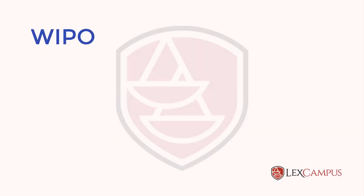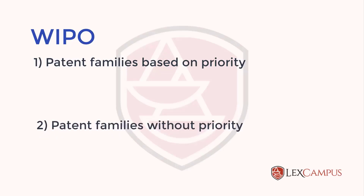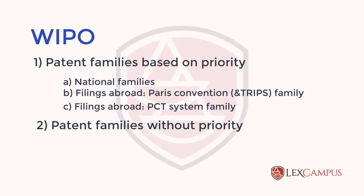WIPO classifies patent families as those based on priorities claimed, and also families without priorities. Priority-based families include national families, filings abroad via the PCT convention route or TRIPS, and filings abroad using the PCT system. A national family is, for example, when an application is filed and a divisional comes out of it. A convention family arises when a basic application is filed and followed up in another country. A PCT system family consists of one international application and many national phase applications that come out of it.